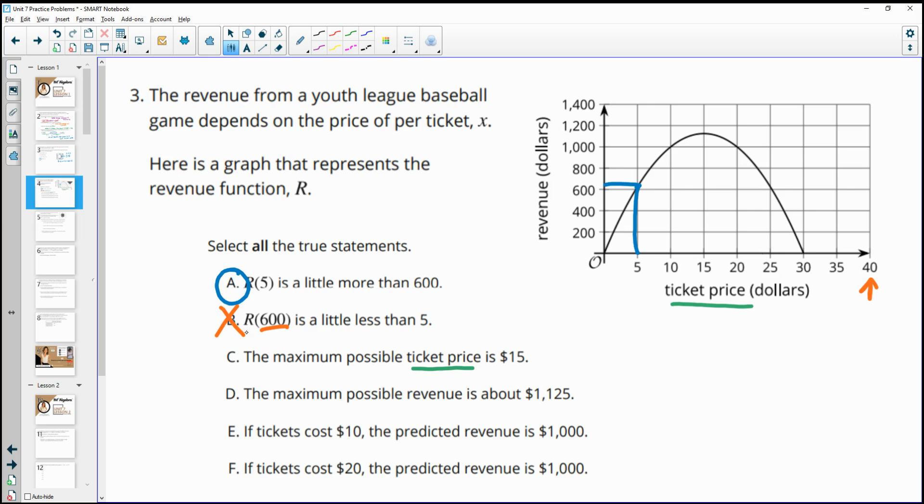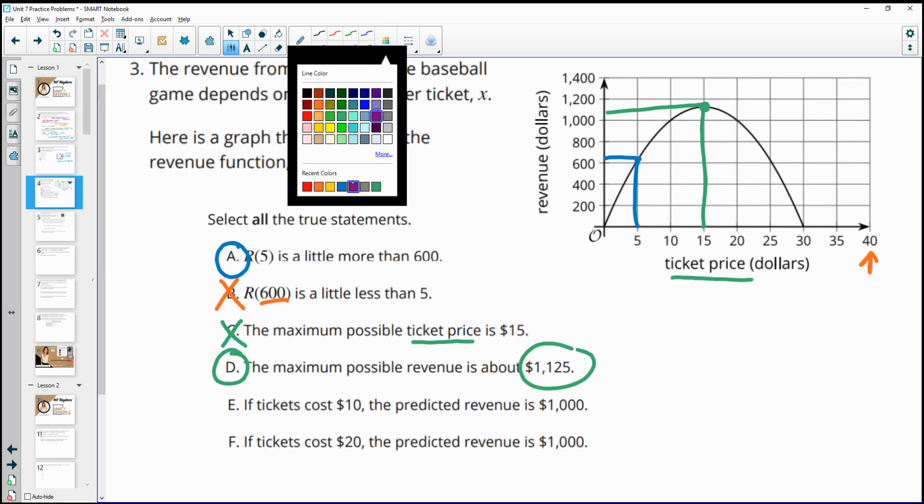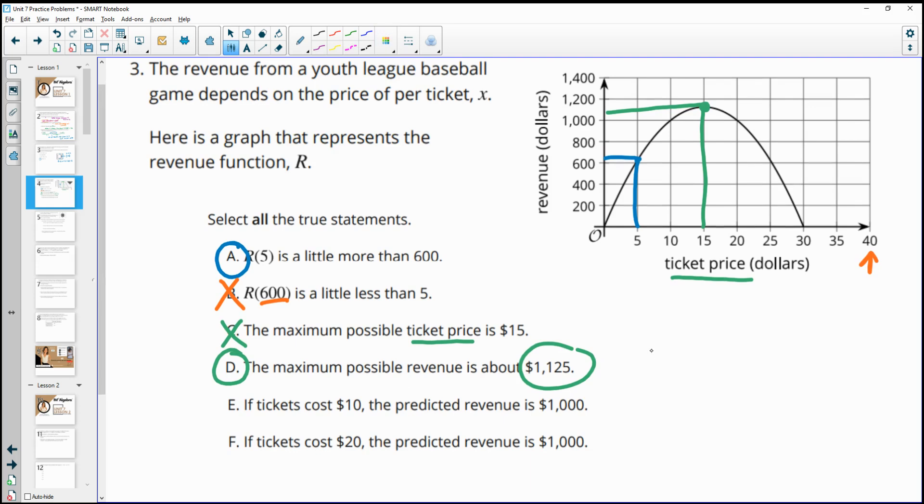What is true is that at $15, we're at the max revenue. So the max revenue is $1,125. That is true. And then if a ticket costs $10, the predicted revenue is $1,000. So if we go to $10, up to the graph, we see that that is producing $1,000 revenue. And then at $20, does $20 also produce $1,000? And that is true as well.